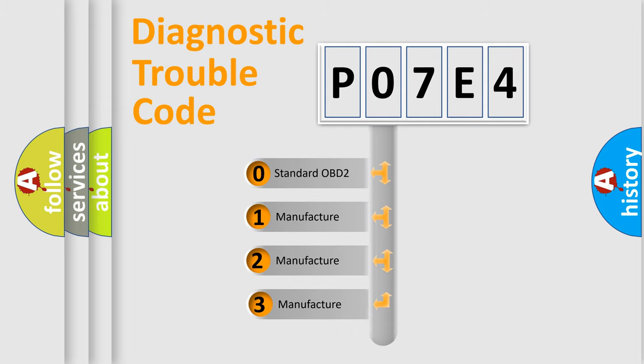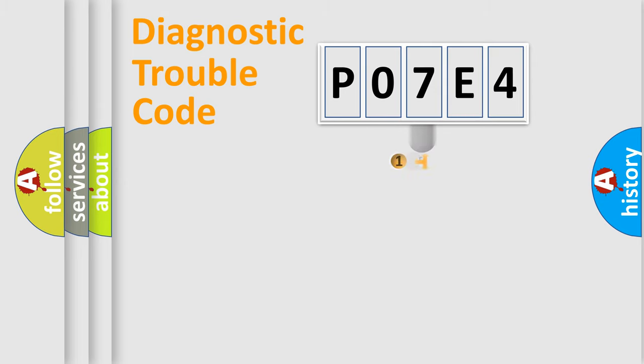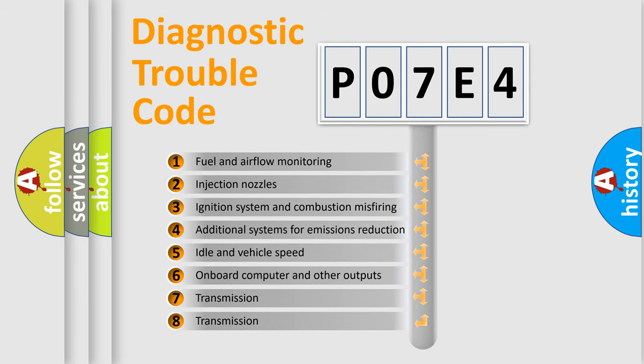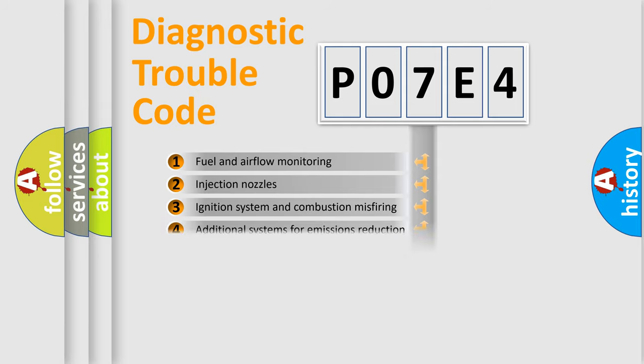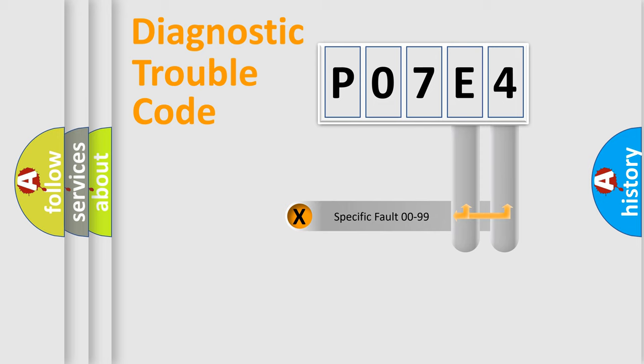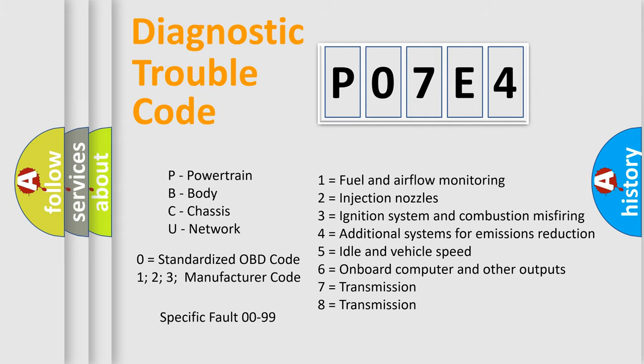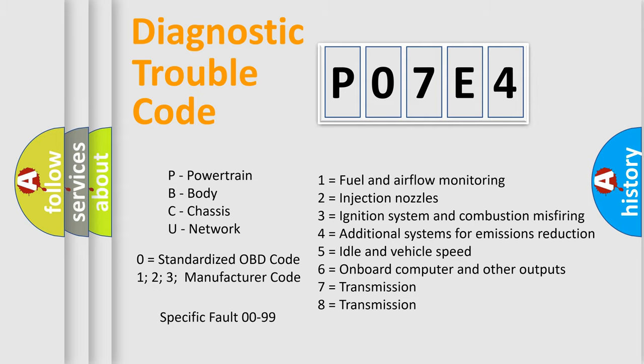If the second character is expressed as zero, it is a standardized error. In the case of numbers 1, 2, or 3, it is a manufacturer-specific error. The third character specifies a subset of errors. The distribution shown is valid only for the standardized DTC code. Only the last two characters define the specific fault of the group. Let's not forget that such a division is valid only if the second character code is expressed by the number zero.